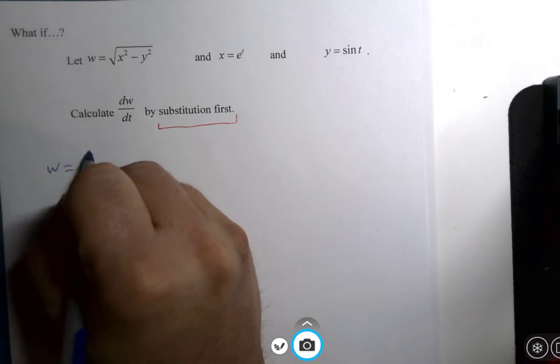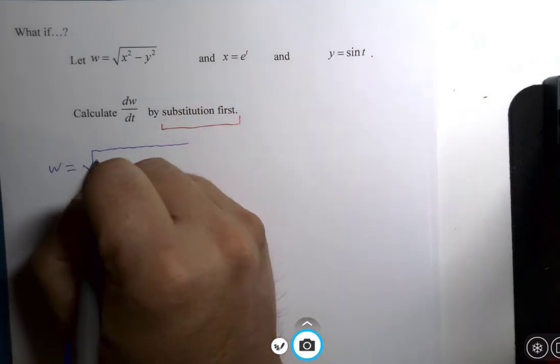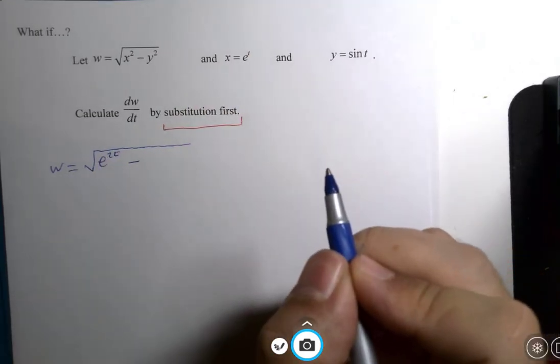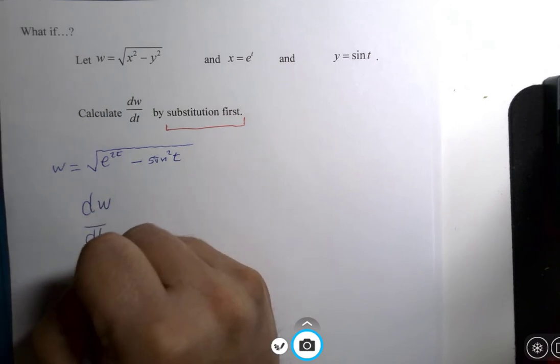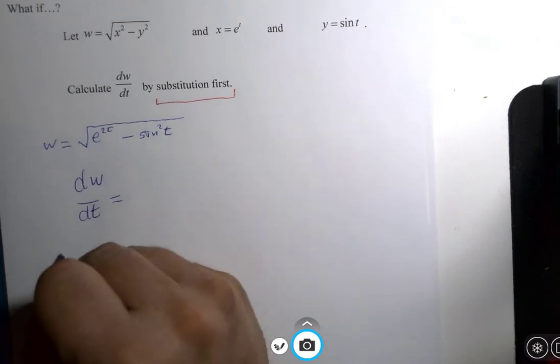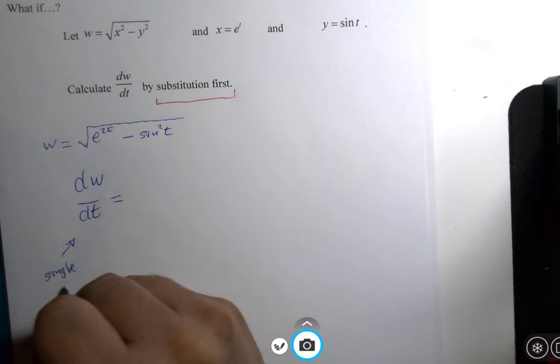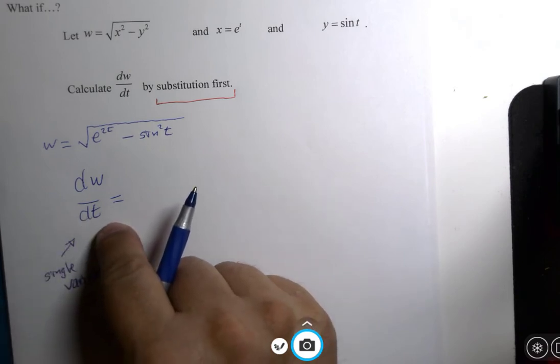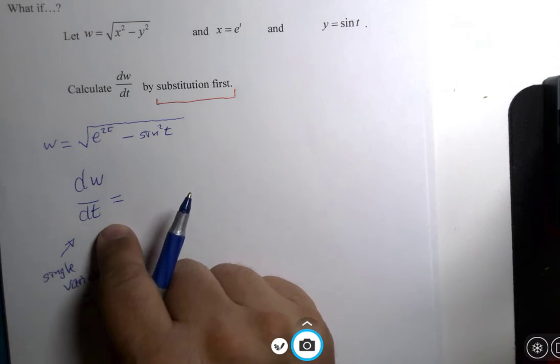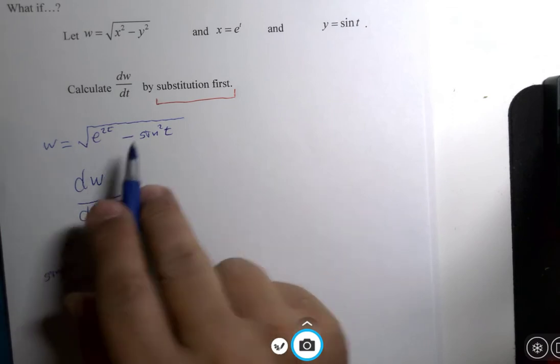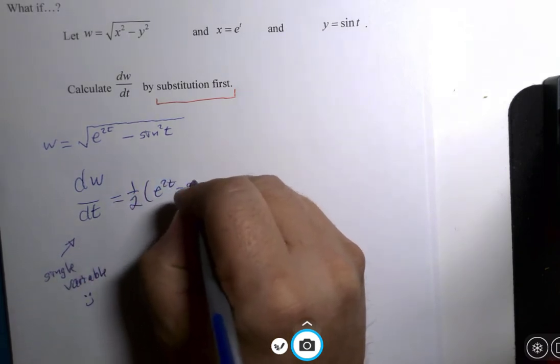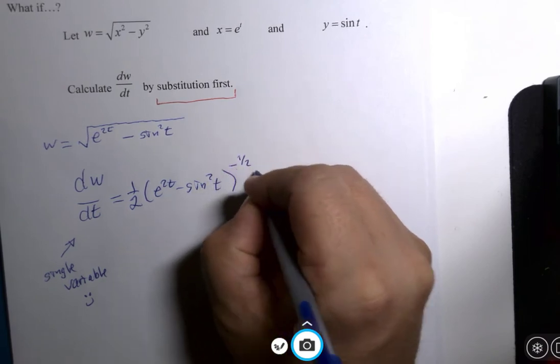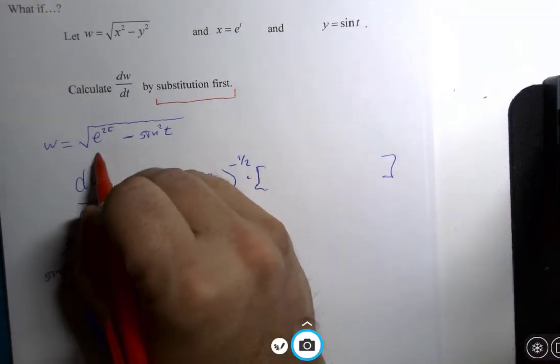So let's do substitution first and see what happens. w would be equal to x squared would be e to the 2t minus y squared, which is sine squared of t. And then I would like to do a Calculus 1 derivative. What is the derivative with respect to t? This is, we'll call it single variable Calculus. The good old days. I could almost use prime here without getting into trouble. Trust me, when we get to where we're headed, the prime symbol is not what we want. So, let's see, we've got to chain 1 half e to the 2t minus sine squared t to the negative 1 half power multiplied by the derivative of this function.